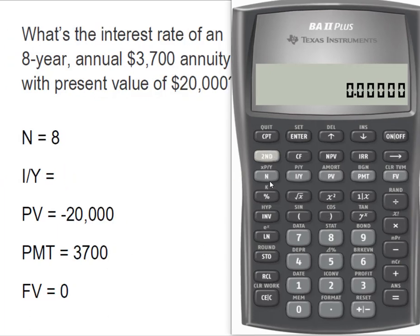I cleared my time value of money keys, and my N is 8. Remember, we don't know what IY is - we're solving for the interest rate. But we know our present value is $20,000, and that has to be entered as a negative. Our payment is the stream of annuity payments, which is $3,700.